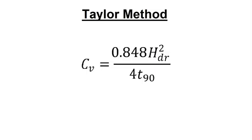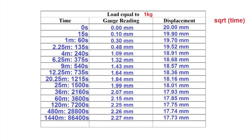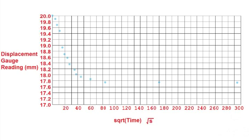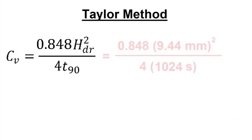For the Taylor method, before graphing calculate the square root of time at each interval. Plot the displacement gauge reading on the y-axis against the square root of time on the x-axis. Extend the slope of the line for the first reading down to the x-axis — this point is t sub a. Extend this point along the x-axis by a factor of 1.15 and connect this point to the data point at a time of 0. Locate the point at which this line intersects your data — this corresponds to t sub 90. Interpolate to find t sub 90 from the graph, then calculate the coefficient of consolidation.